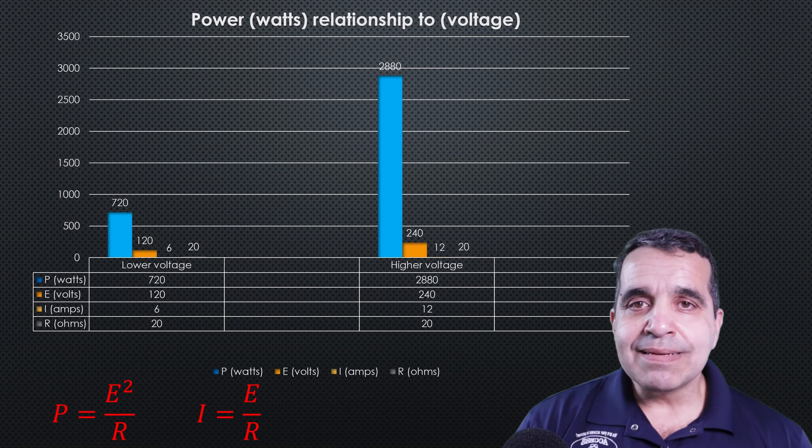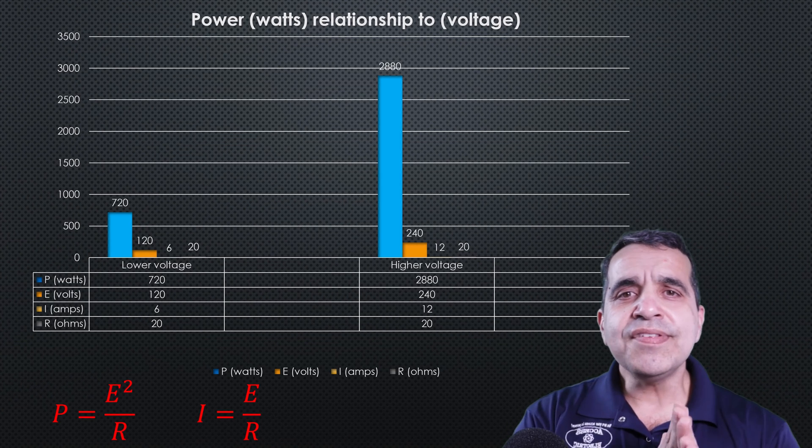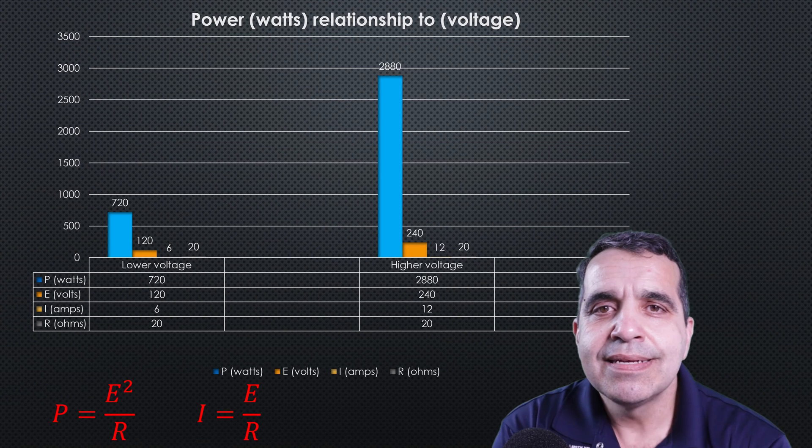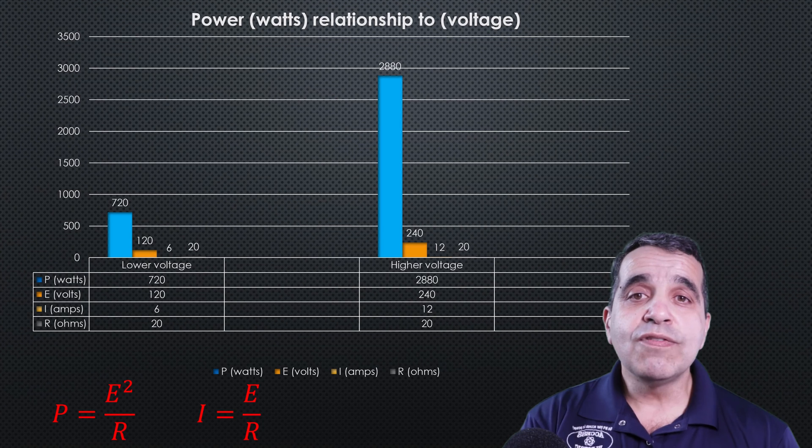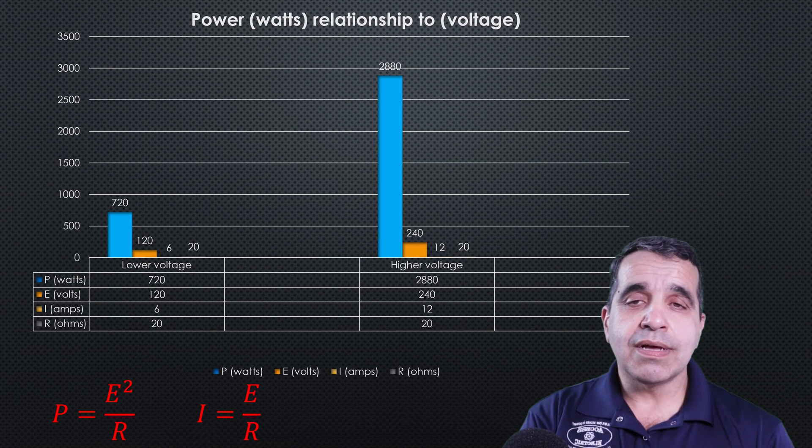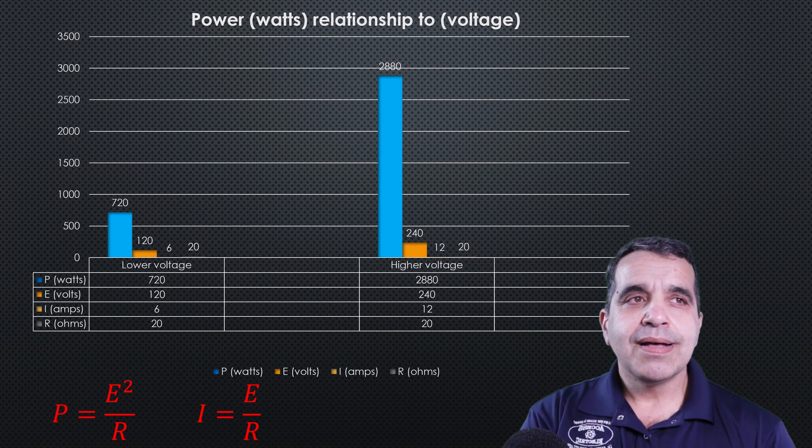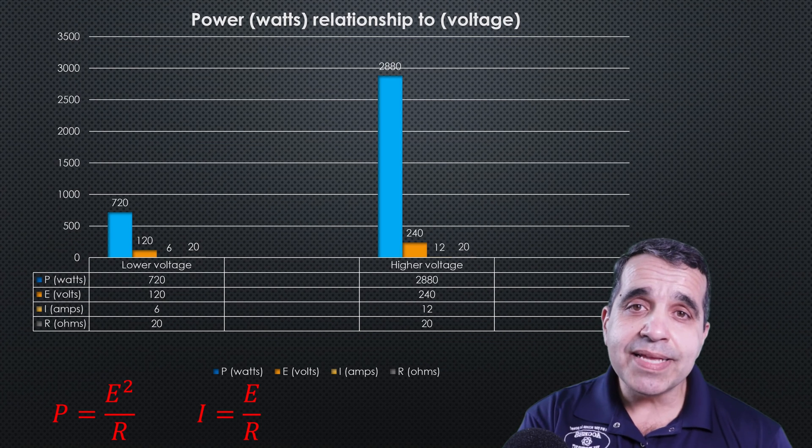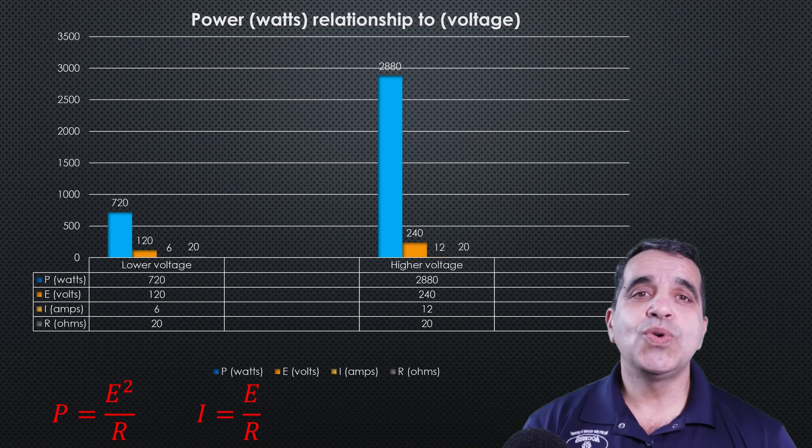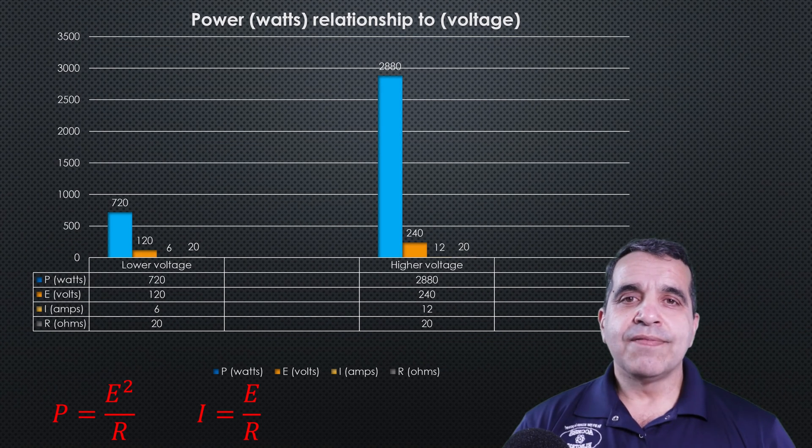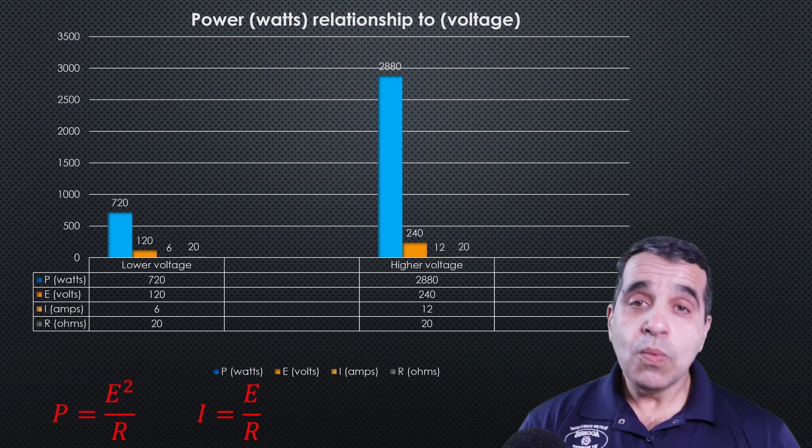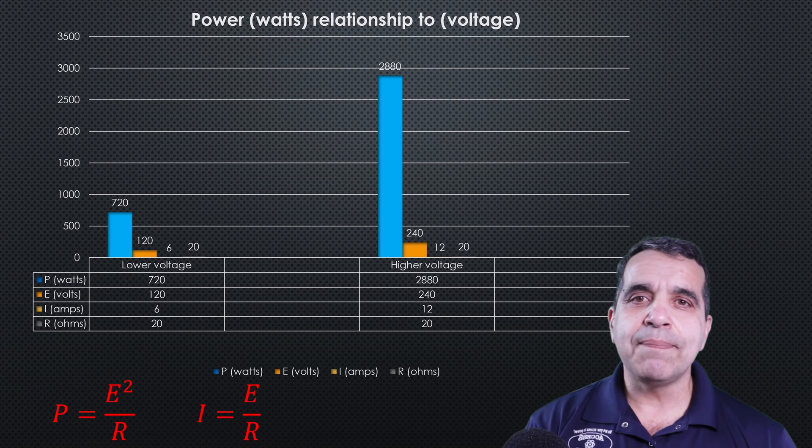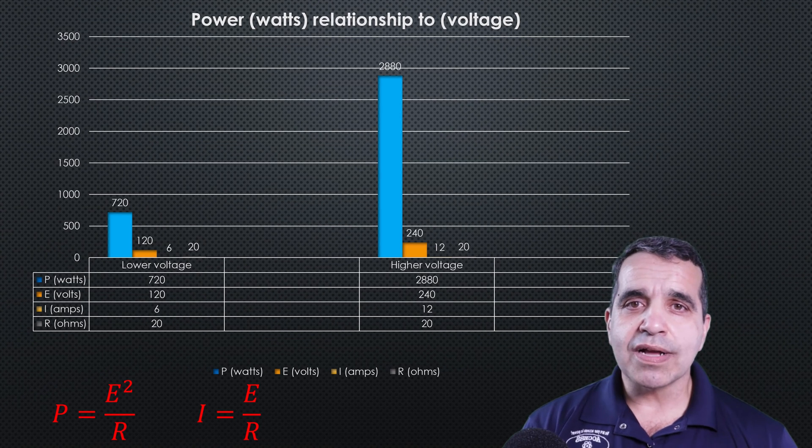Now why is this important? This is really important because if you have a 240 volt load, a motor or an oven with a heating element that's rated at 240 volts, and if you only have a 208 volt system, it will work. You can hook up that motor, you can hook up that heating element, it will work.